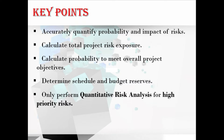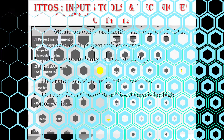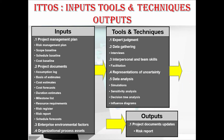Let's move to our ITTOs — inputs, tools and techniques, and outputs. In inputs we have the project management plan, which consists of the risk management plan, scope baseline, schedule baseline, and cost baseline. And coming to project documents, which contains the assumption log, basis of estimates, cost estimates, cost forecast, duration estimates, milestones list, resource requirements, risk register, risk report, and schedule forecast.